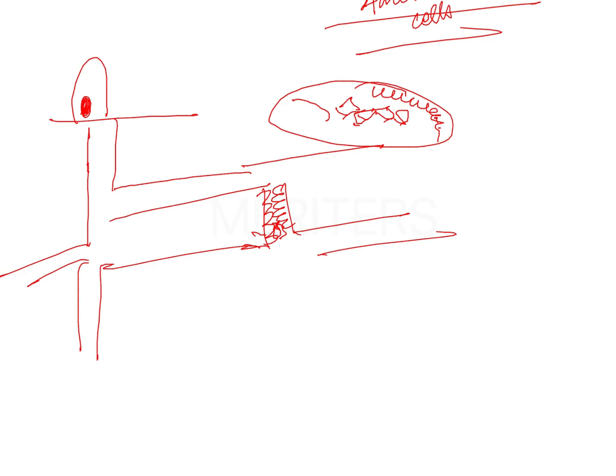The last one is desmoplastic ameloblastoma. In desmoplastic ameloblastoma, the connective tissue and the ameloblastoma-like cells have undergone some form of change. The connective tissue undergoes desmoplasia, making it appear very glass-like, and the cells of the ameloblastoma are arranged like a kite tail. This kite tail appearance is very characteristic of desmoplastic ameloblastoma.